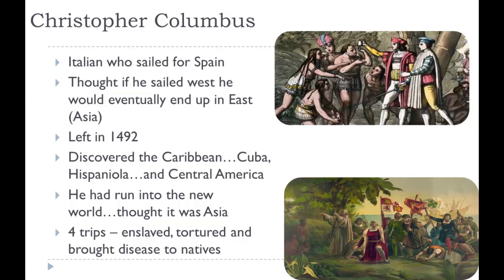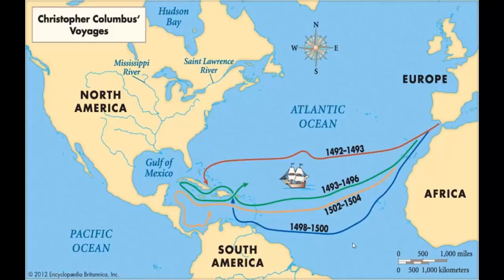He discovered Cuba, Hispaniola, and Central America — Honduras and Nicaragua. He thought he had reached Asia, but he hadn't — he didn't know it was a different place. He made four trips but enslaved, tortured, and brought disease to the natives, so he was not a good person. He was looking for the four G's. He was arrested on his last voyage because he wasn't treating his crew well and they mutinied. He never landed in North America — it was always in the islands.